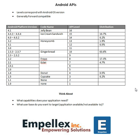Levels correspond with Android OS versions. As we can see, the Android platform version from 1.0 to 4.1, the code names — Jelly Bean, Ice Cream Sandwich, Honeycomb, Gingerbread — they all have very delicious sounding names. We have the API level from 16 down to 1, and API level 16 is the most current Android platform version, and generally they are forward compatible.